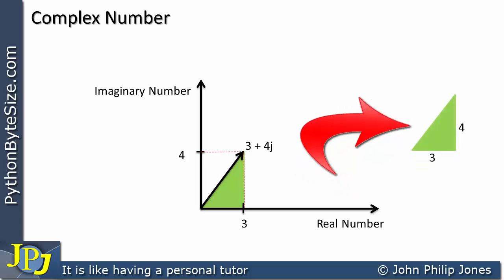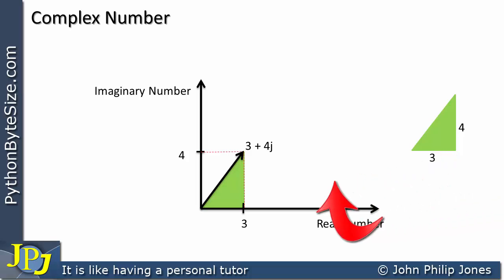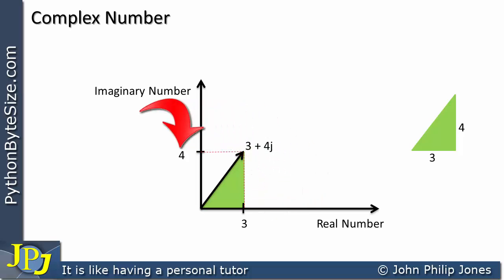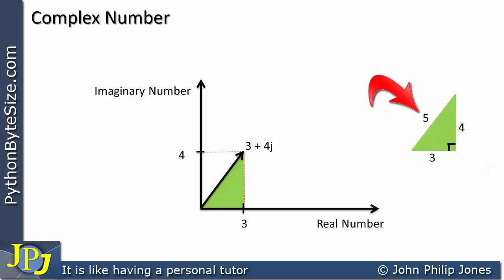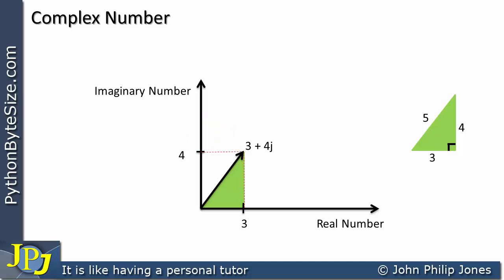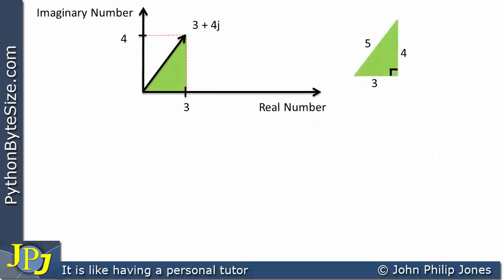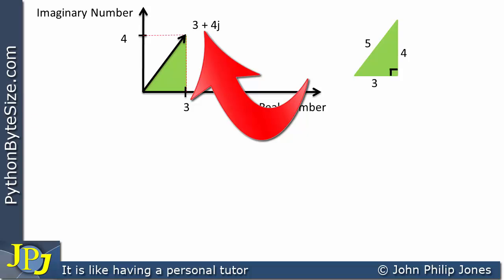If we look at this area, we can see this length is 3 and this length is 4, and this is a right angle triangle. If you've got these two lengths as 3 and 4, you have a 3-4 triangle because this is a right angle. So this length here is 5, which means the length of this arrow is also 5. Let's now have a look at how Python would treat a complex number if you were to put it into the absolute function.